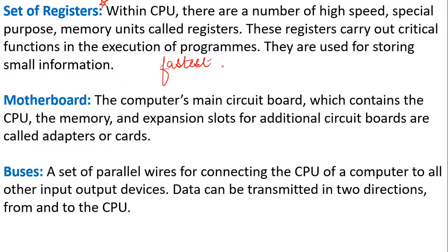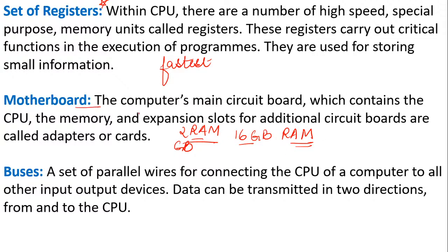Motherboard — if you get to see what is inside a computer, there is a main circuit board called the motherboard. All the different slots like RAM, ROM, all those chips are embedded inside the motherboard. For example, if your computer is slow with only 2 GB RAM, a computer expert will say increase your RAM to 16 GB. This extra RAM is put into the motherboard. So motherboard is the computer's main circuit board which contains the CPU, memory, and expansion slots for additional circuit boards.